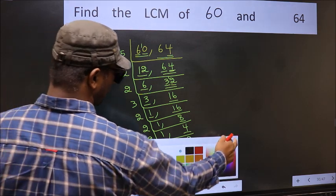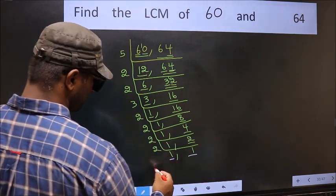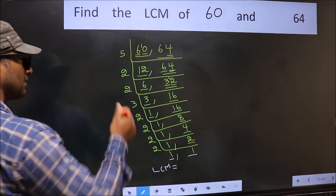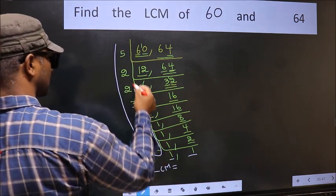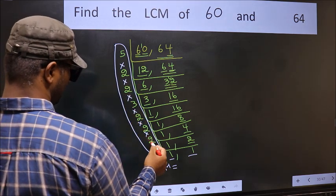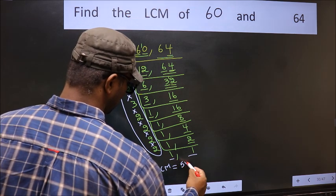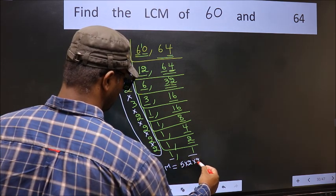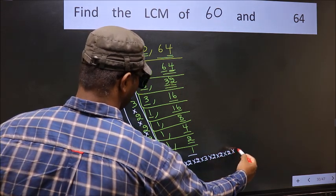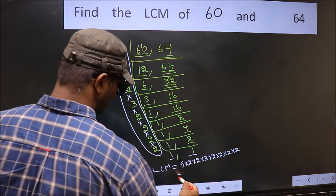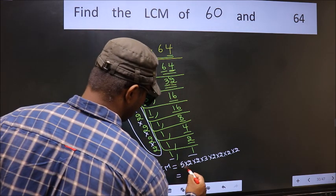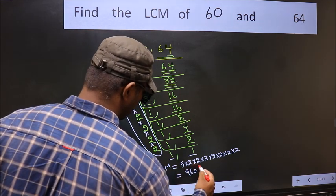So we got 1 in both places. Our LCM is the product of these numbers. That is 5 × 2 × 2 × 3 × 2 × 2 × 2 × 2. When we multiply these numbers, we get 960. So 960 is our LCM.